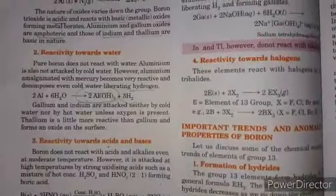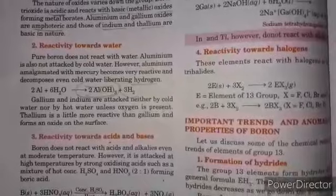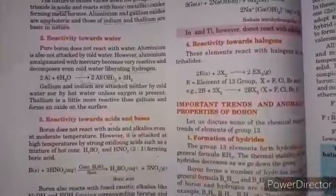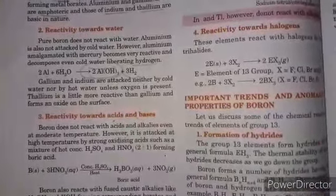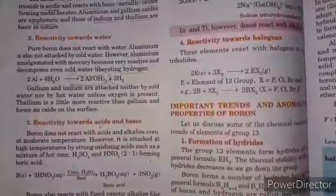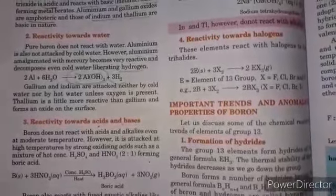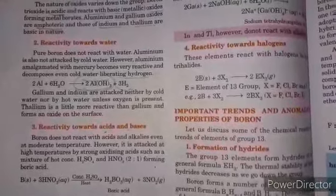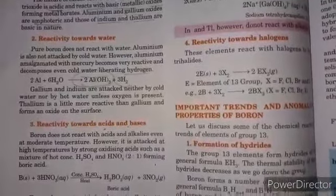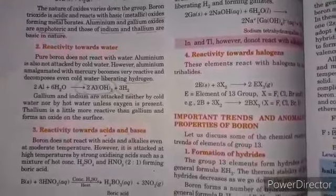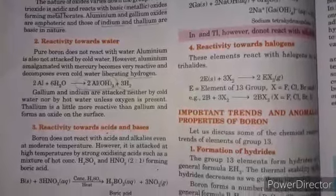Aluminum and boron react with acids and alkalis even at moderate temperature. Boron is not readily attacked by acids or alkalis at normal temperature, but it reacts with hot concentrated acid. It reacts with strong concentrated acid even at high temperature to form particular products.